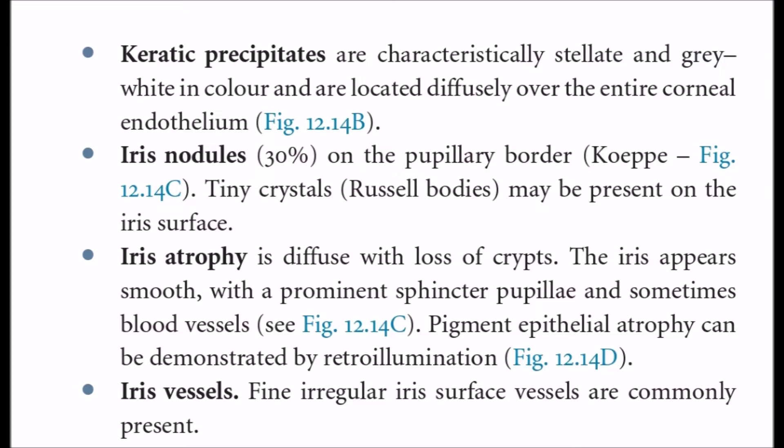Iris nodules, present in about 30% of cases, are on the pupillary border. KP nodules, tiny crystals, and Busacca bodies may be seen on the iris surface. Iris atrophy is diffuse with loss of crypts. The iris appears smooth with a prominent sphincter pupillae and sometimes visible blood vessels. Pigment epithelium atrophy can be demonstrated by retroillumination. Fine irregular iris surface vessels can be seen easily because of iris atrophy.